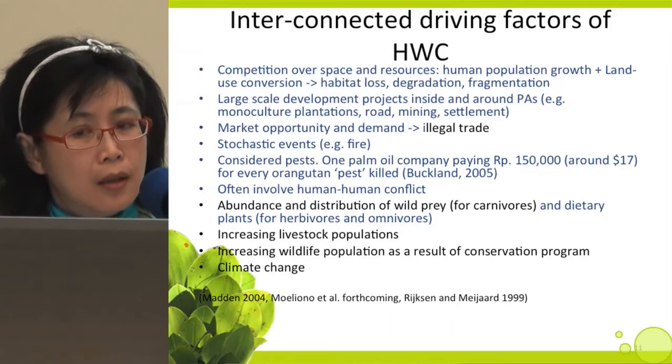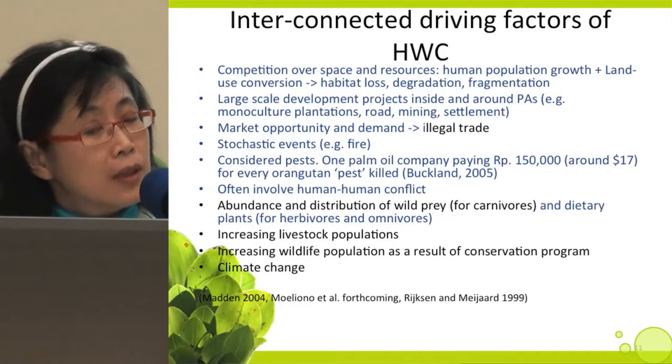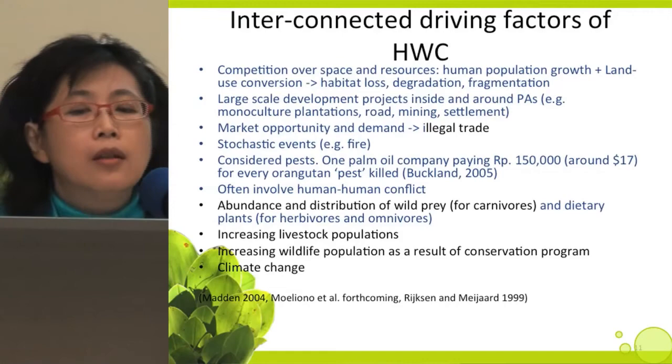One previous report states that one palm oil company paid 150,000 — around 17 dollars — for every orangutan killed as a pest. Human-wildlife conflict also often involves human-human conflict. Another reason is the abundance and distribution of wild prey for carnivores, and dietary plants for herbivores and omnivores. Increasing livestock populations trigger wildlife to chase livestock rather than wild prey. In some cases like tigers and Asian lions, increasing wildlife populations as a result of conservation programs has led to competition among themselves. The last reason is climate change.